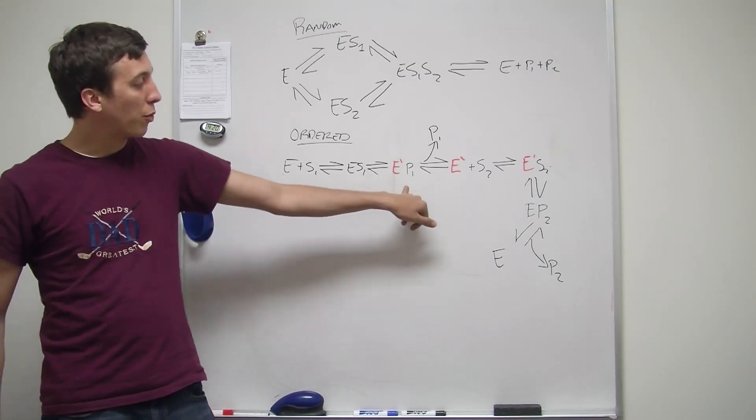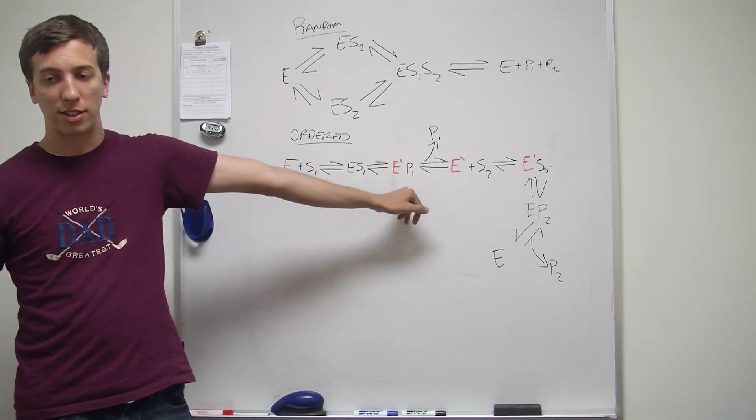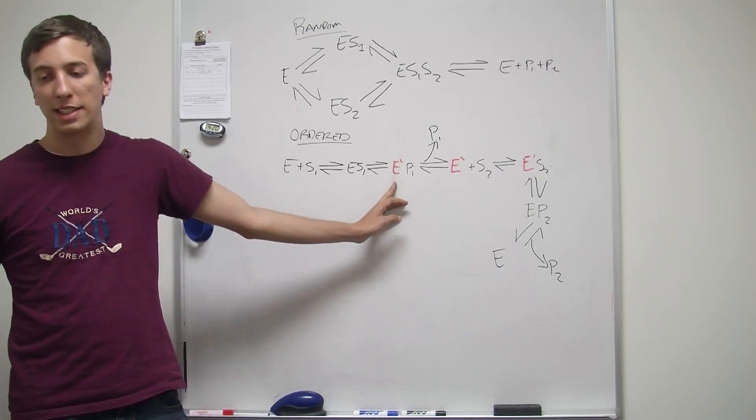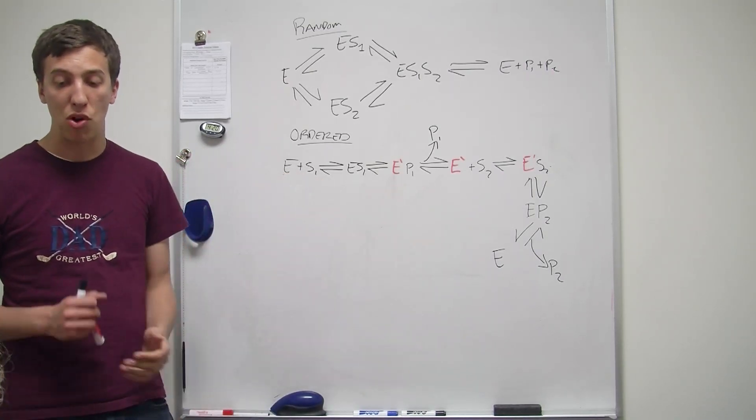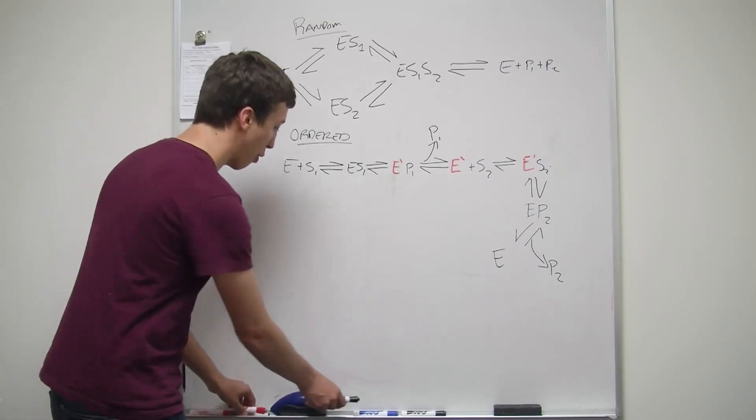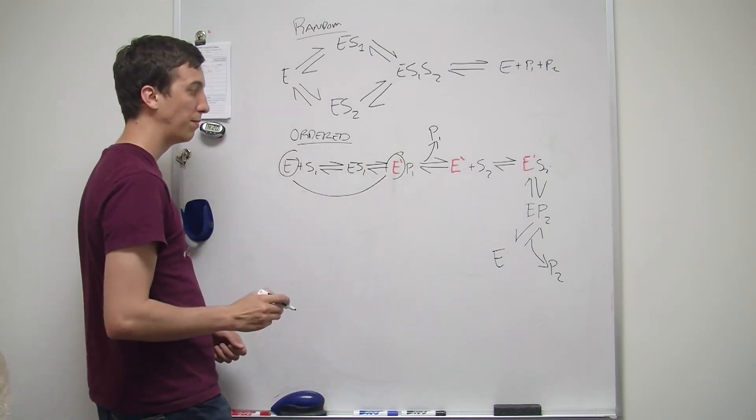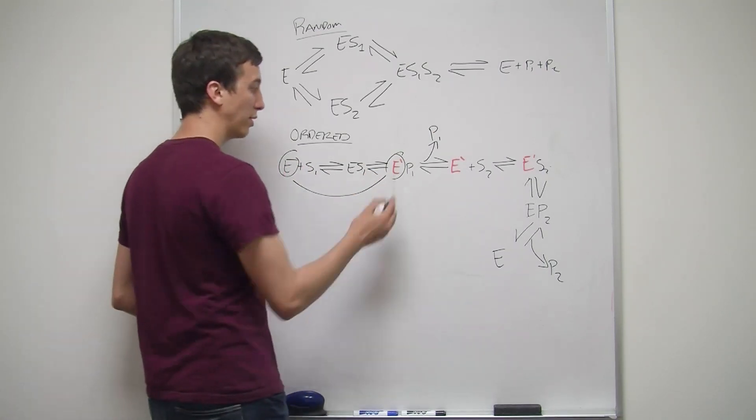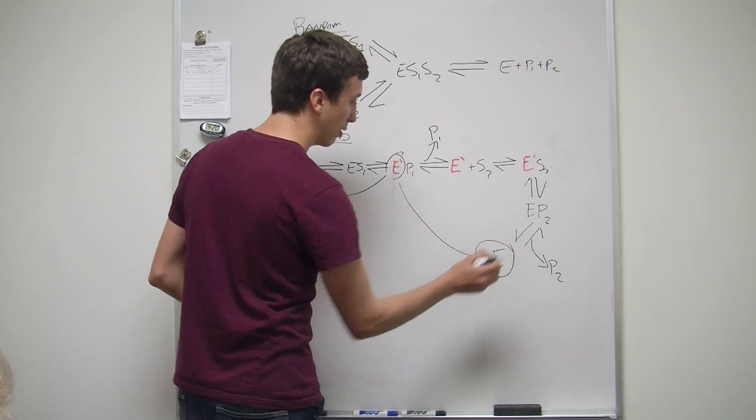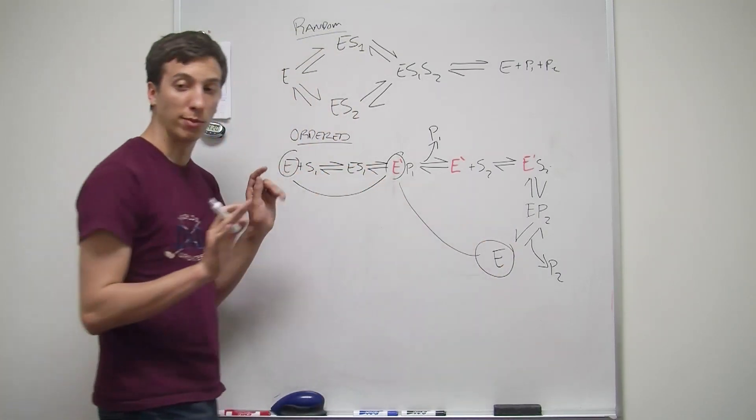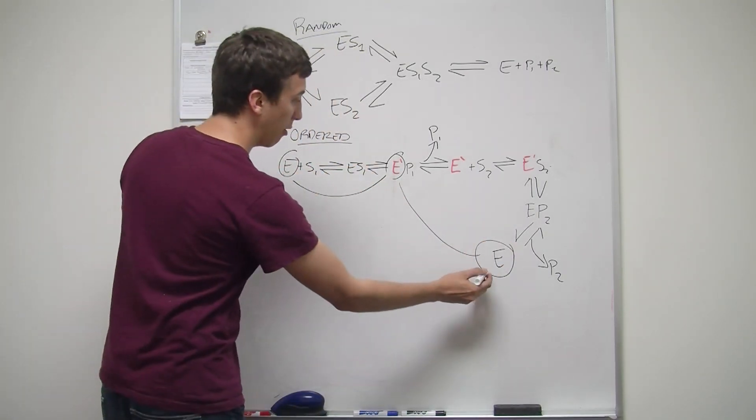It then binds, reacts, and turns it into a product. And when it actually does this reaction, it turns that enzyme into what we'll call enzyme prime, which is actually a different form. So these two are different, just like these two are different. They're just different forms of the same enzyme.